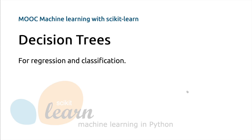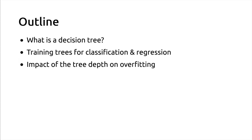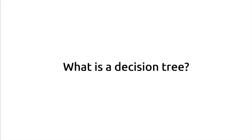Let me start with a couple of definitions. What is a decision tree? Then I will give some intuition on how we can train trees both for classification and regression tasks, depending on whether or not the output variable is continuous. And then I will quickly mention the impact of the size of the tree on the overfitting behavior, or the generalization performance of the model.